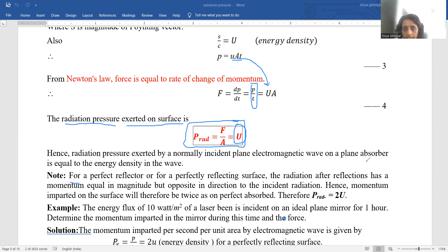So the radiation pressure exerted on the surface is equal to dp. The radiation pressure exerted by a normally incident plane electromagnetic wave on a plane absorber is equal to the energy density in the wave.